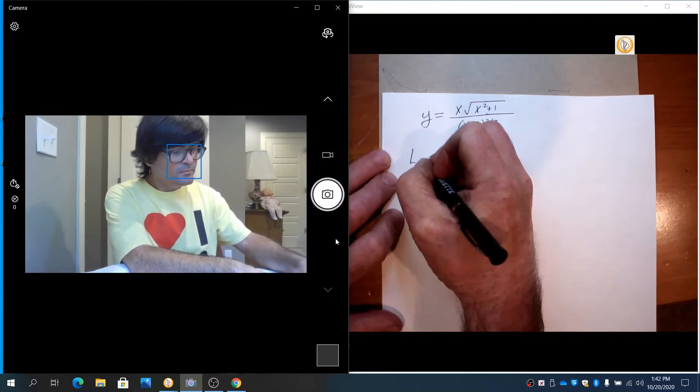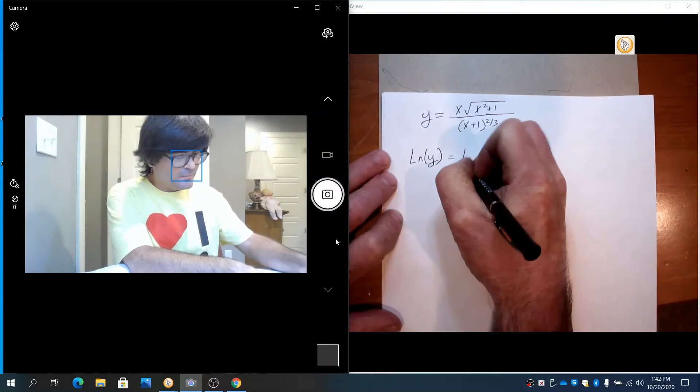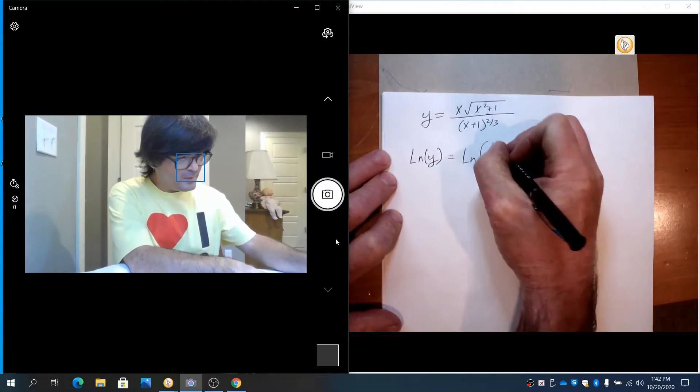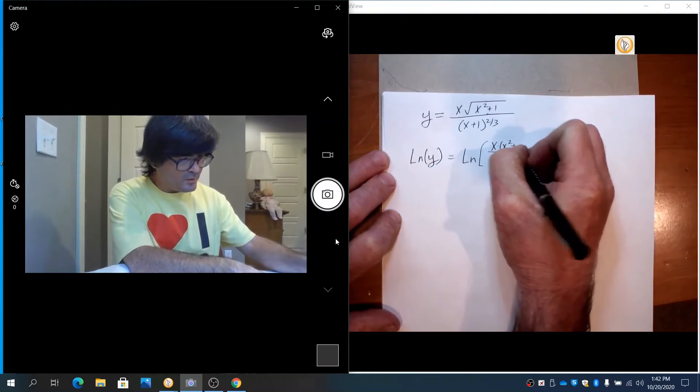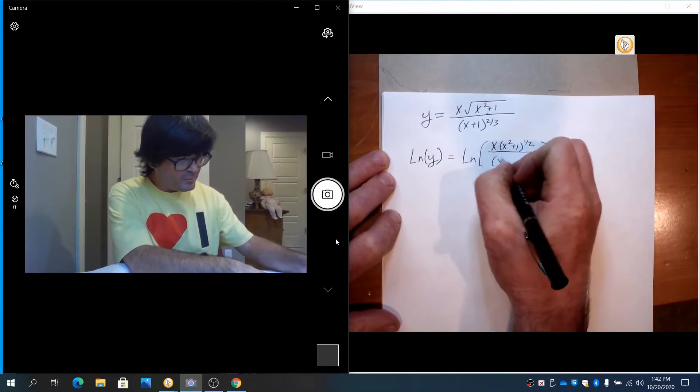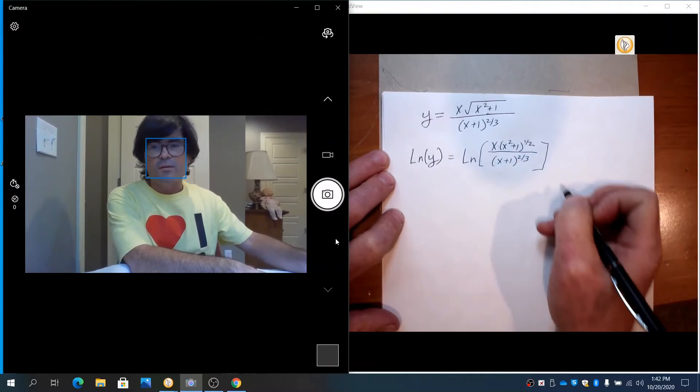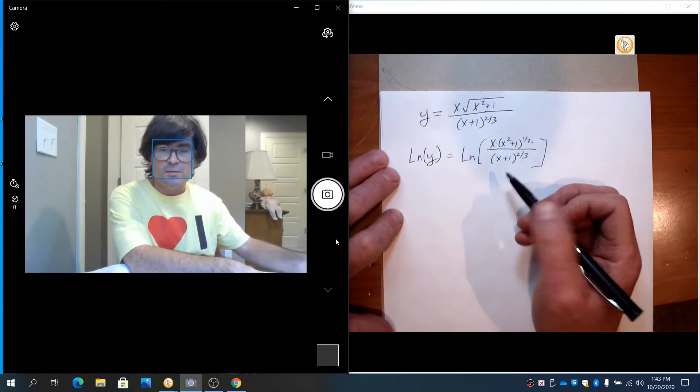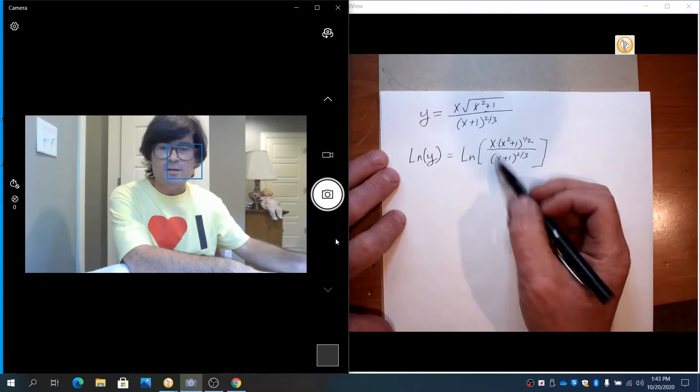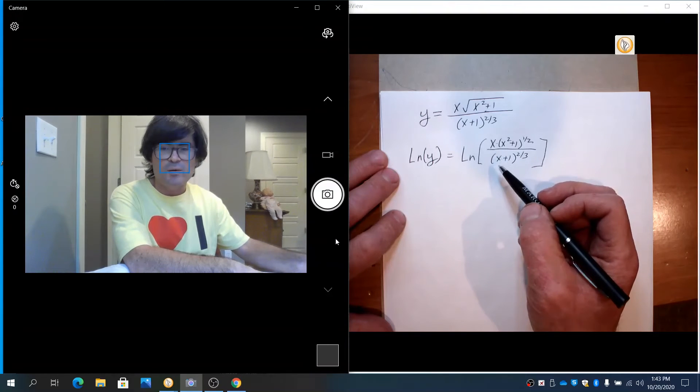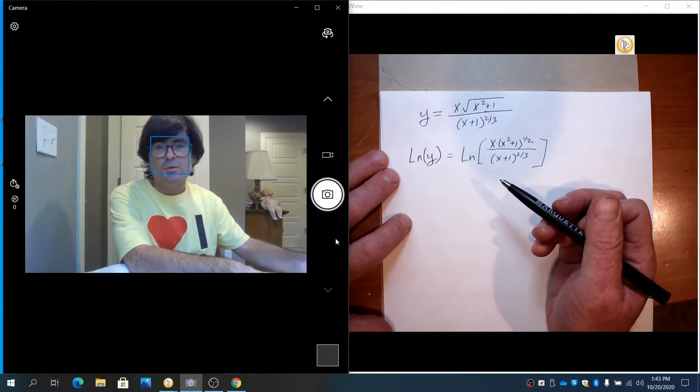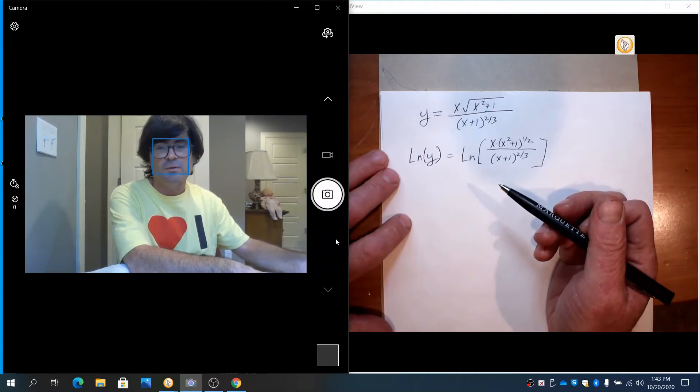So what we're going to do instead is we're going to choose to take the log of both sides here. And bear with me, I'm going to write this as x squared plus 1 to the 1 half, and then down here x plus 1 to the 2 thirds. Okay, the reason I've written this with a log on both sides is I'm going to take advantage of my log properties, the 3 log properties from Algebra 2, to break this up into 3 small logs rather than 1 big huge awful one. In general in calculus, if you can take a difficult problem and break it into several more simple problems, that is a big win. That will make your life simpler. You should do that.